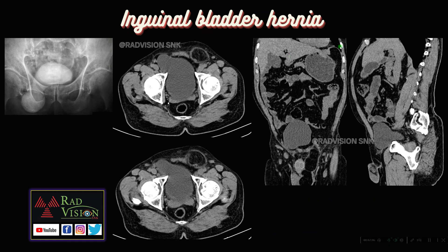Next, you can see bilateral inguinal hernias, but here part of the bladder is herniating into the right inguinal region — this is called inguinal bladder hernia. On IVP, you can see the herniation of the bladder into the right inguinal region. Remember inguinal bladder hernia, and the close differential will be urinary bladder diverticulum.